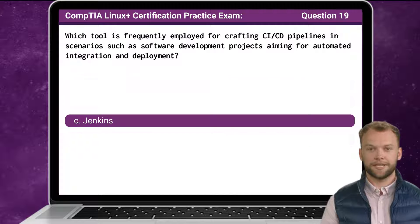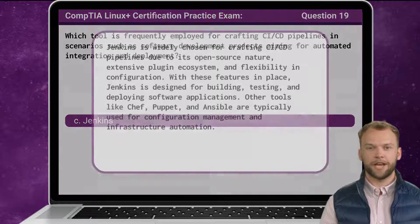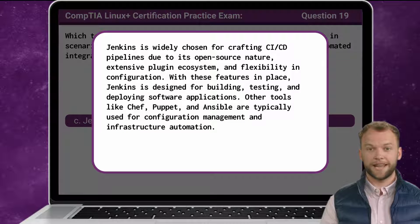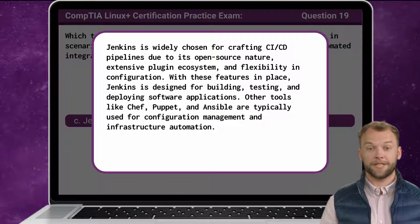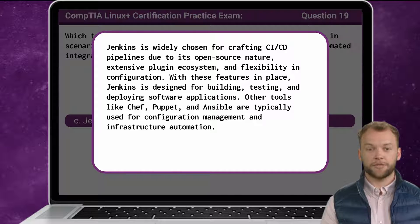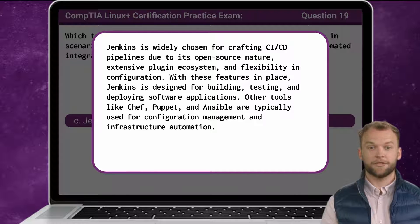The answer is C: Jenkins. Jenkins is widely chosen for crafting CI/CD pipelines due to its open-source nature, extensive plugin ecosystem, and flexibility in configuration. With these features in place, Jenkins is designed for building, testing, and deploying software applications. Other tools like Chef, Puppet, and Ansible are typically used for configuration management and infrastructure automation.